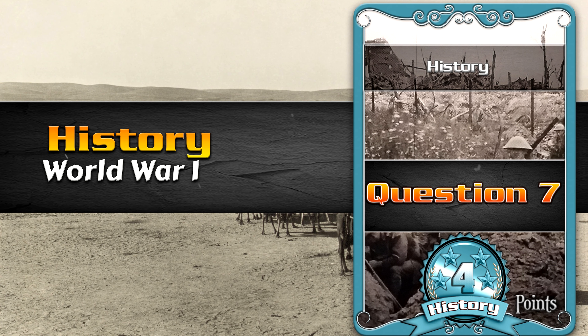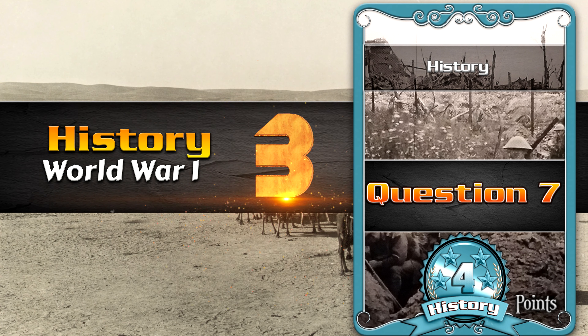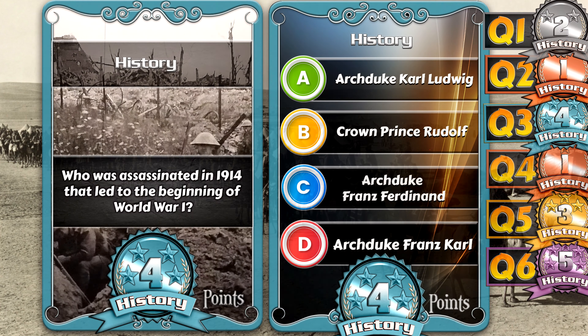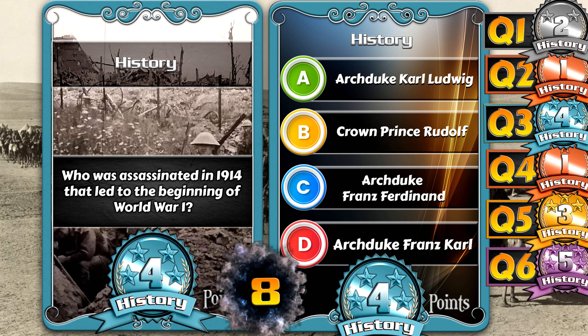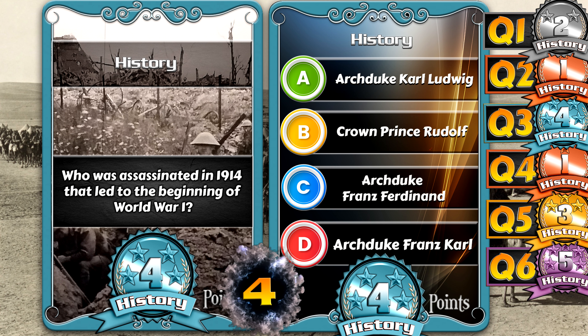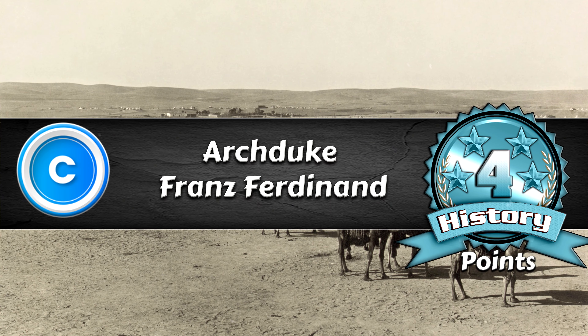Question 7. History. World War I. Who was assassinated in 1914 that led to the beginning of World War I? Archduke Karl Ludwig. Crown Prince Rudolf. Archduke Franz Ferdinand. Archduke Franz Karl. 3, 2, 1. The answer is Archduke Franz Ferdinand.